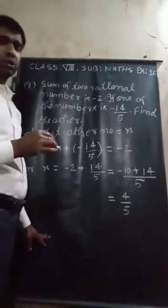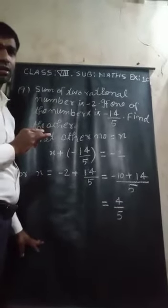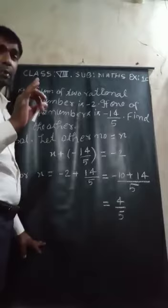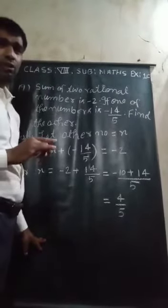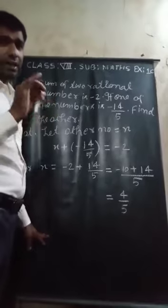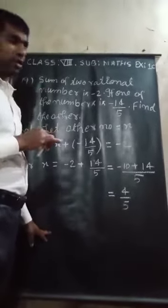That means sum of 2 rational numbers is given, and among them one number is also given. So, find out the other number. Let us go in the solution form.